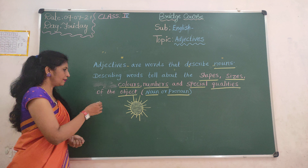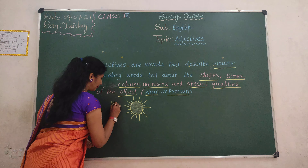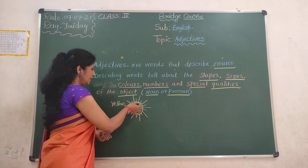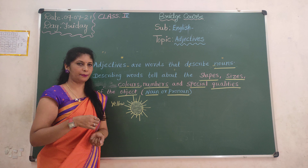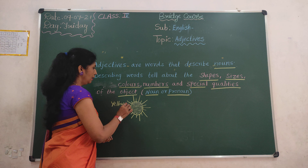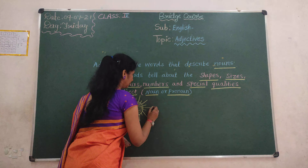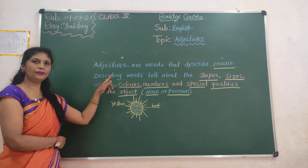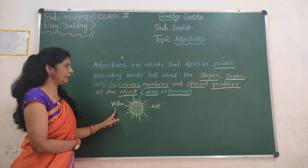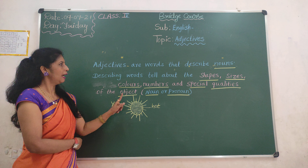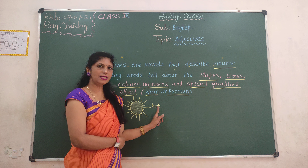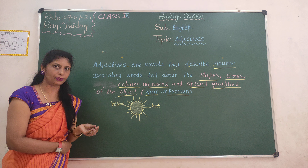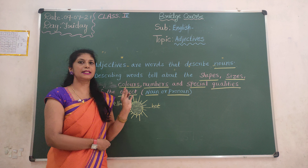What is this, children? The sun. What is the color of the sun? Yellow. What is the shape of the sun? Round shape. The sun is hot. So when describing words tell about the color — yellow — and special qualities — hot — these are adjectives.